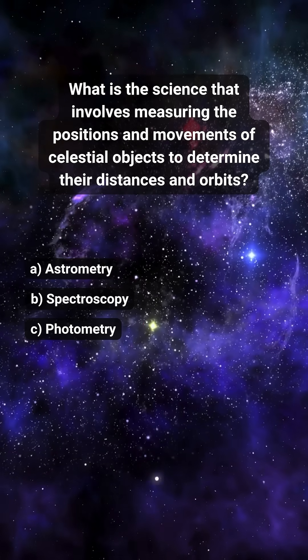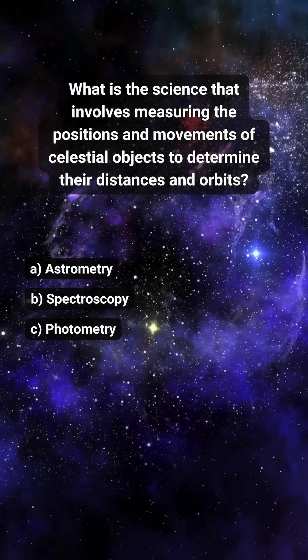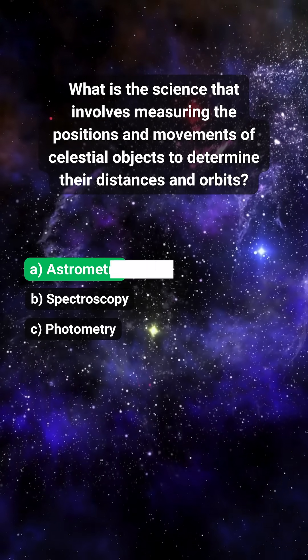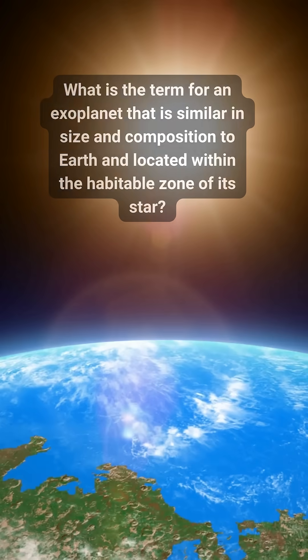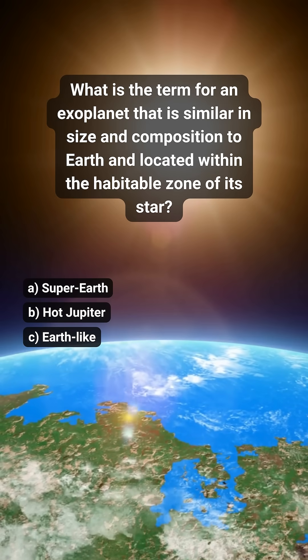What is the science that involves measuring the positions and movements of celestial objects to determine their distances and orbits? A. Astrometry.